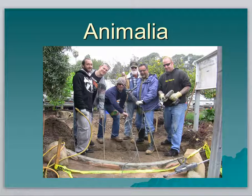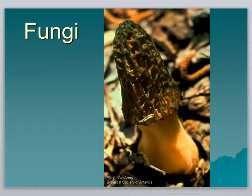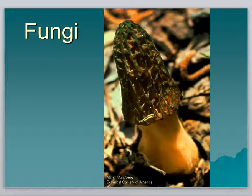The animal kingdom includes humans, insects, birds, and lots of other things. The fungal kingdom includes mushrooms — and when you're looking at or eating a mushroom, you're really just eating the reproductive portion of that organism. There's a vast system of hair-like mycelia underground that are also part of this organism.